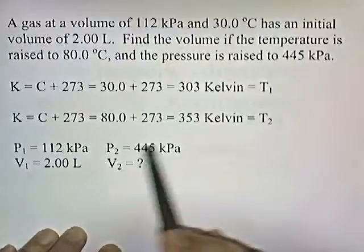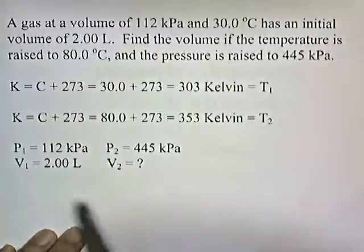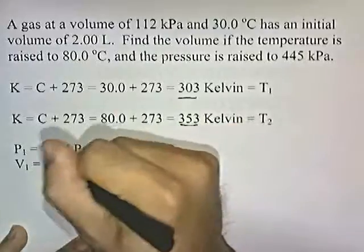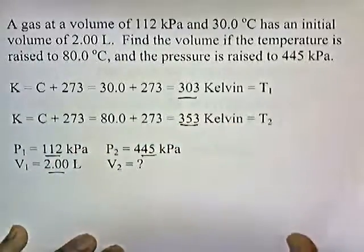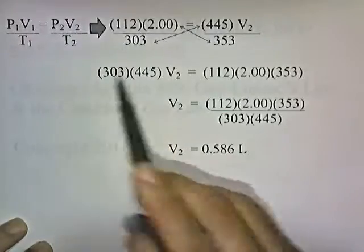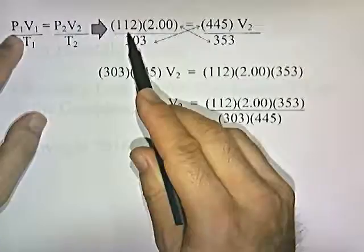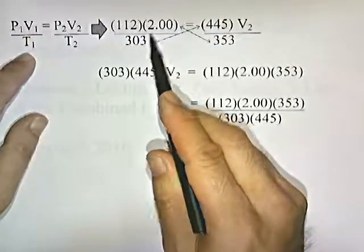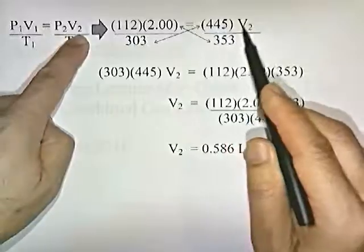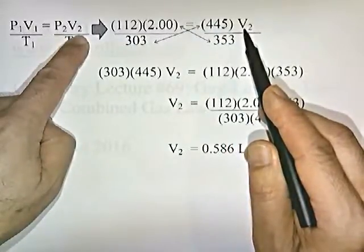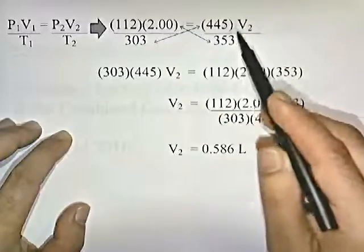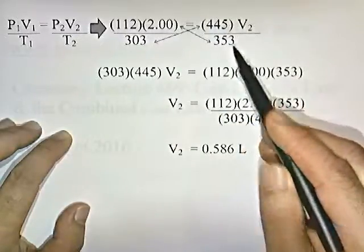Temperature is changing and pressure is changing, and we want to know what's going to happen to this 2 liters — is it going to get bigger or smaller? We stick the numbers into the formula: P1 V1 over T1 equals P2 V2 over T2. So 112 times 2 over 303 equals 445 times V2 divided by 353.